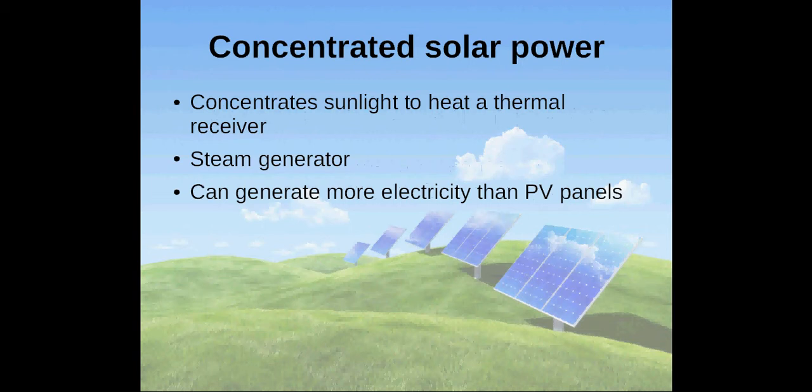Concentrated solar power or CSP concentrates energy from the sun's rays to heat a thermal receiver suitable to hold high temperatures. Unlike a photovoltaic system where sunlight is converted to electricity, the thermal receiver converts sunlight to heat where it will be transported to a steam generator to convert it to electricity.